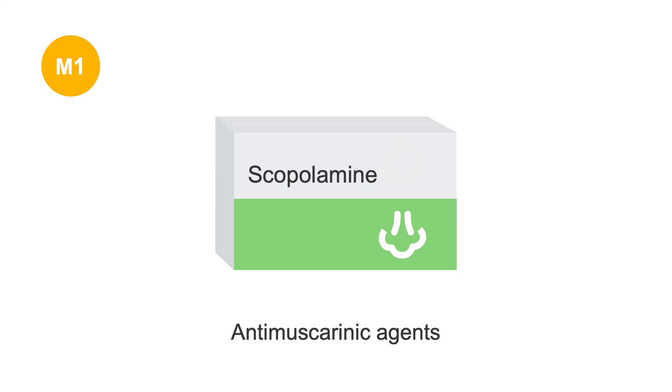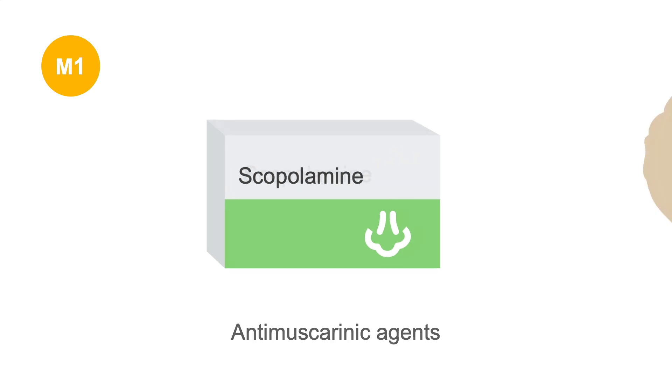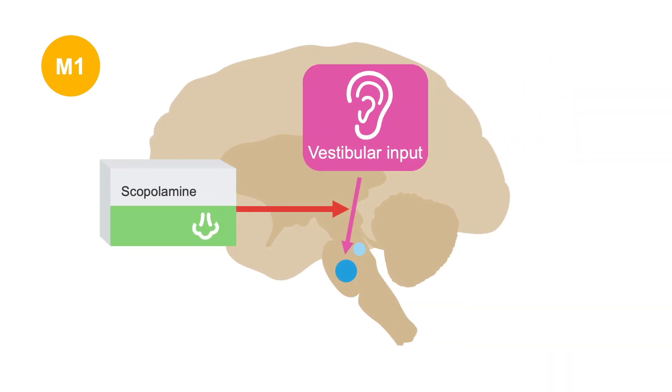First, we have the anti-muscarinic agents. An example here is scopolamine, which acts on the vestibular pathway.